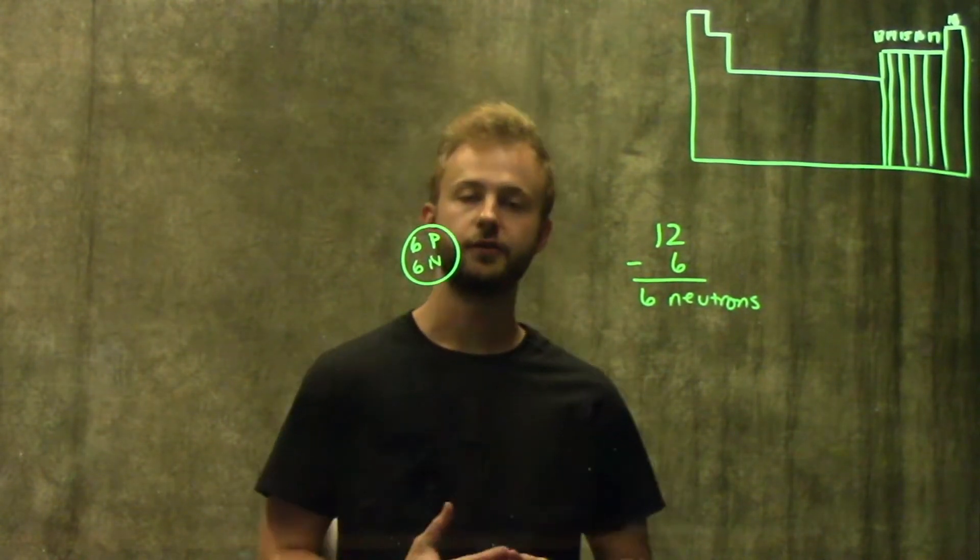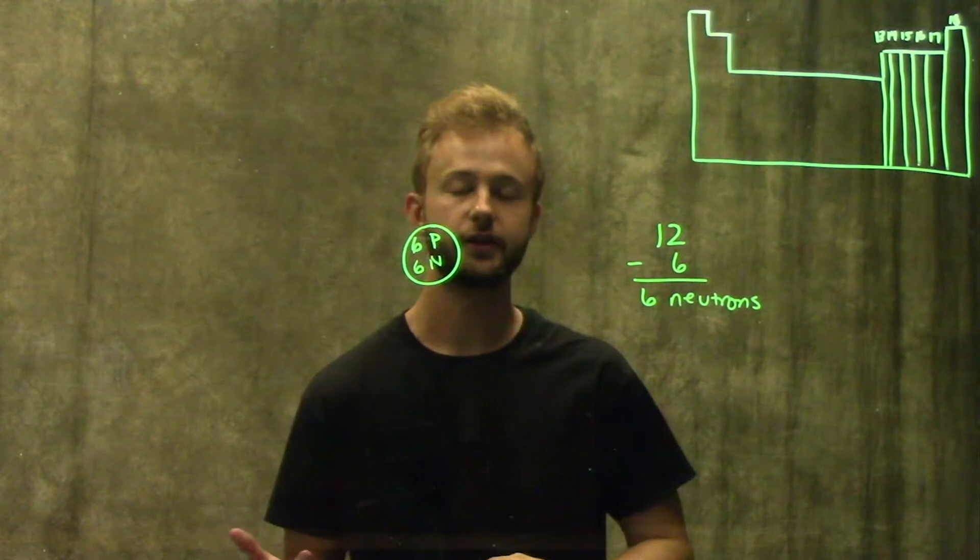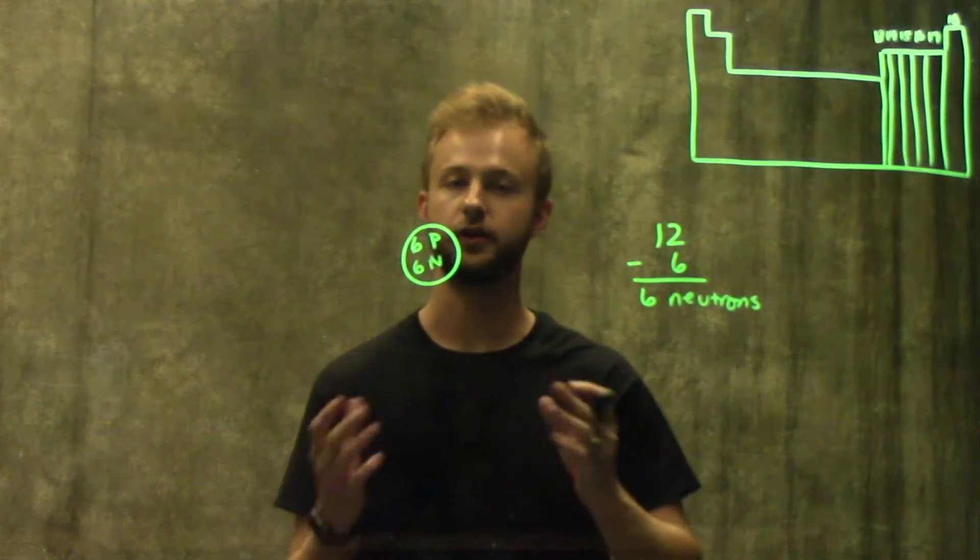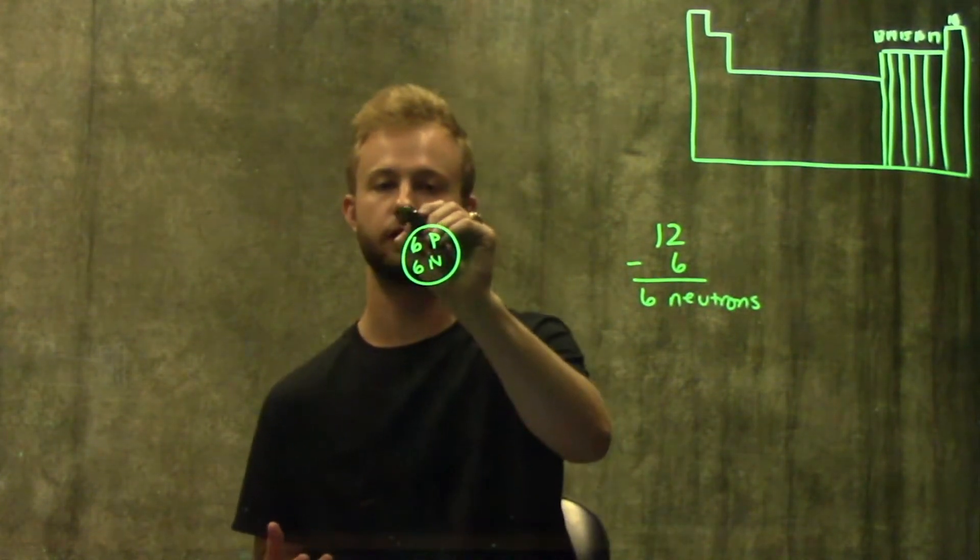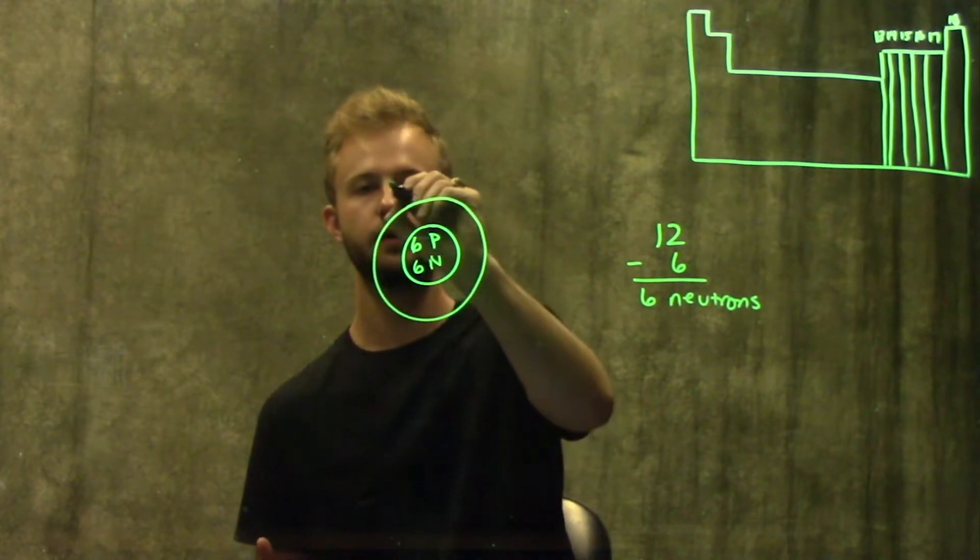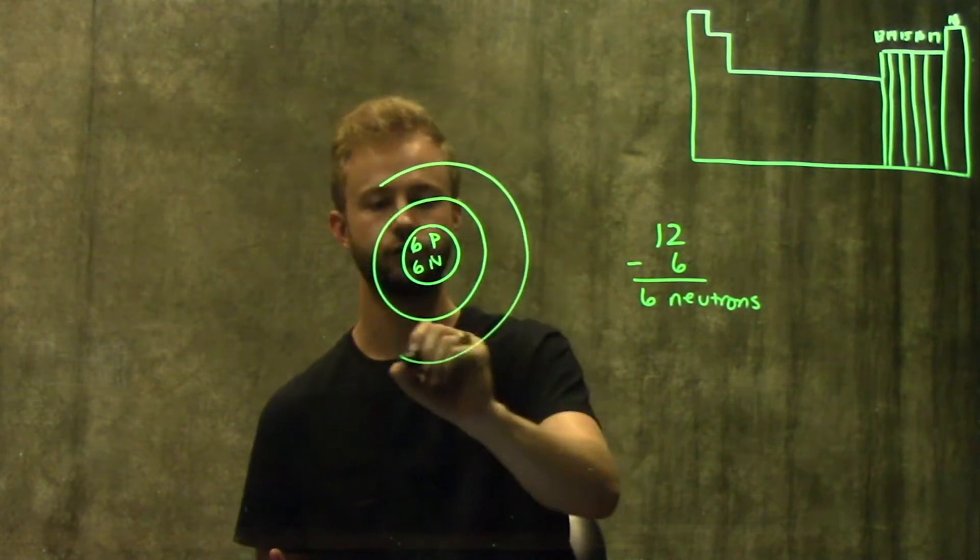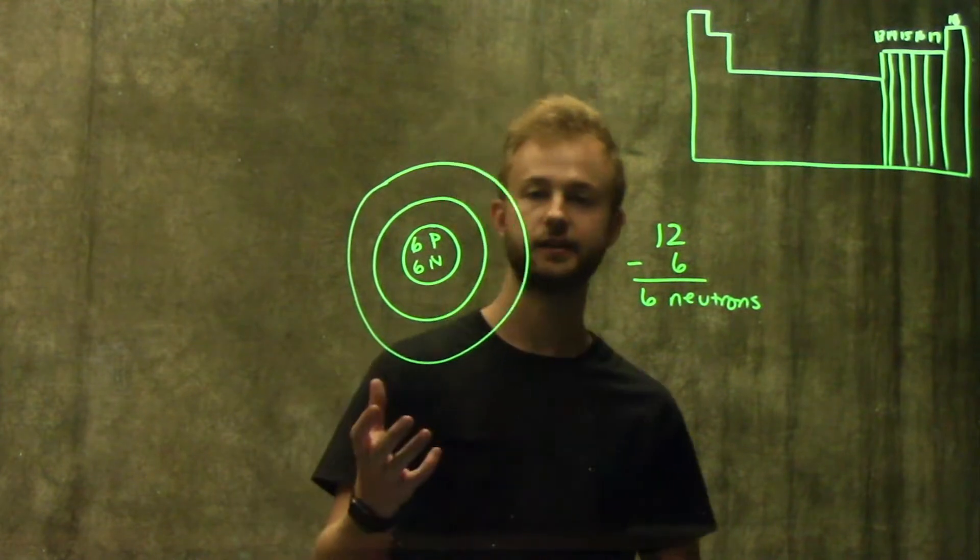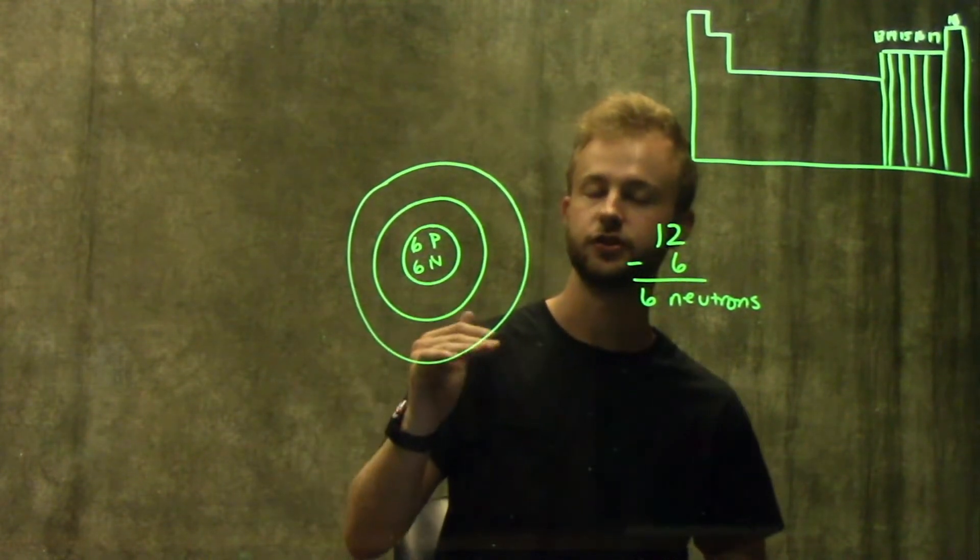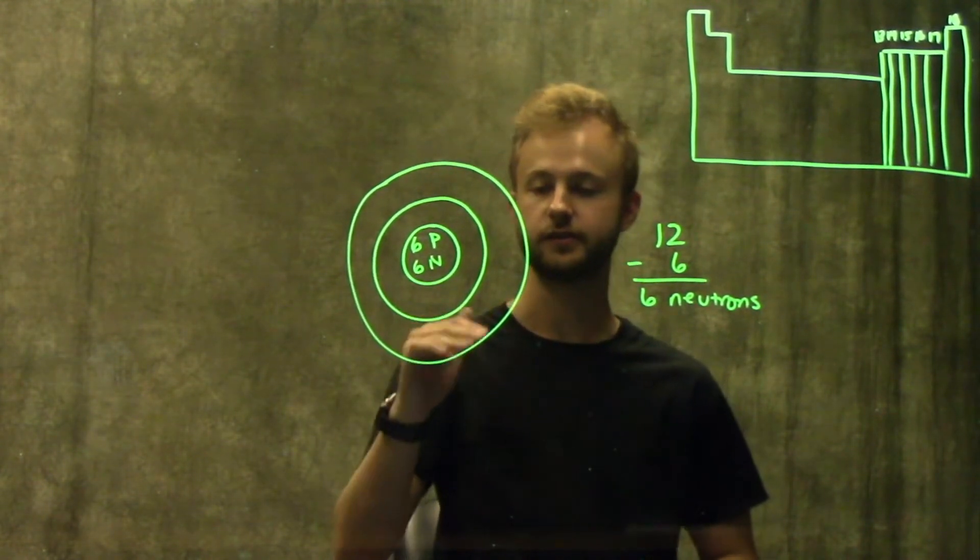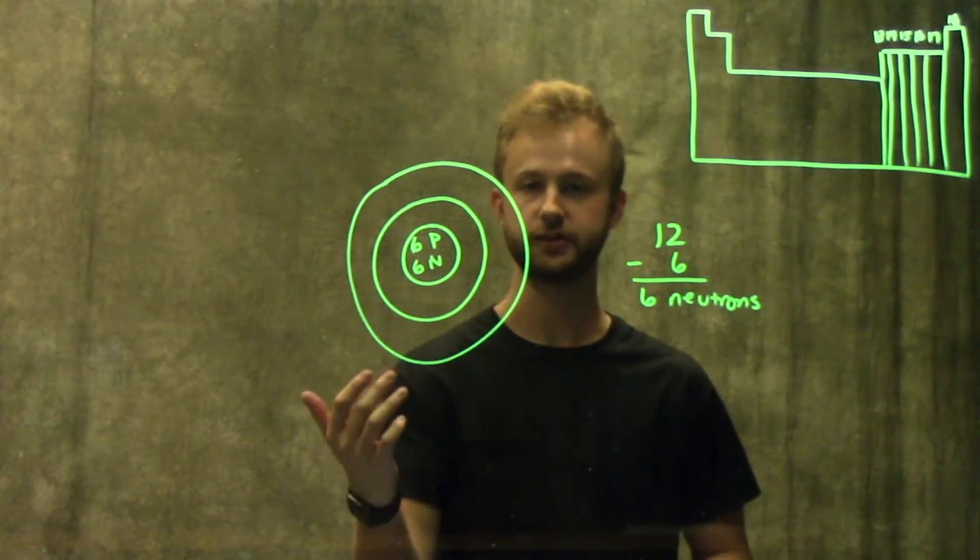Now we also know from the video on subatomic particles that electrons are not found in the nucleus. They're actually found outside the nucleus in something called electron shells. These electron shells radiate outwards from the nucleus, and as those electron shells get farther and farther away from the nucleus, the electrons in those shells have higher and higher energies.